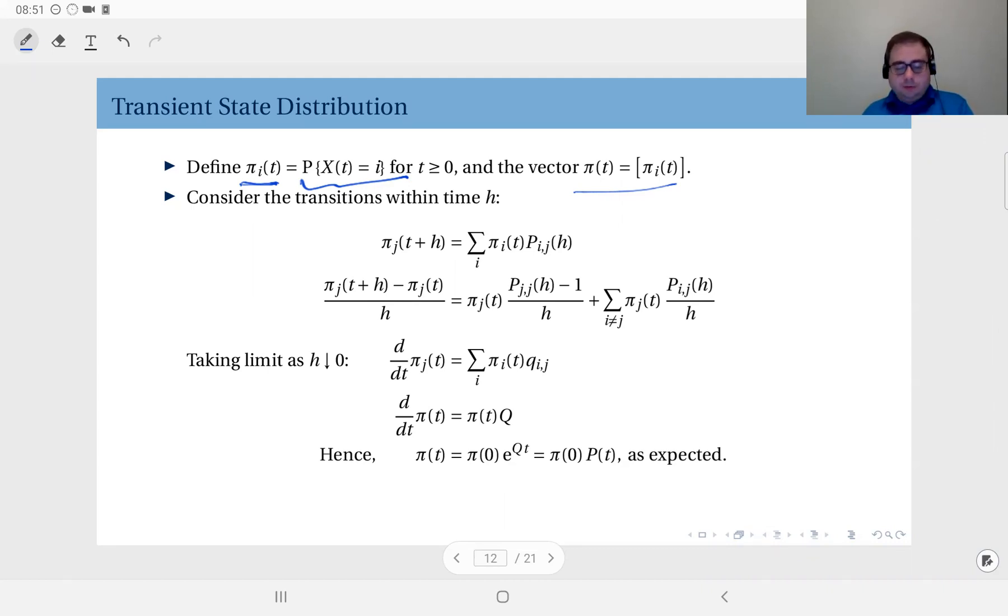For this purpose, let's first consider the transitions within time h, where h will be a small value. So state transition within time h into state j. This is simply the probability that you will observe the Markov chain at time t+h in state j. So that could happen while the Markov chain was in state i at time t. And within that period from t to t+h, within that duration of h, you made a transition from state i to state j.